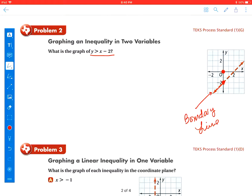But if it doesn't go through the origin, (0, 0) is going to be your best bet to use to decide which region is going to be shaded.